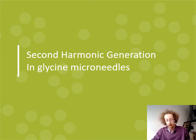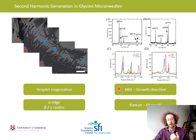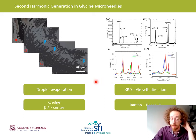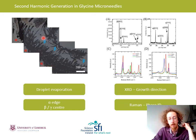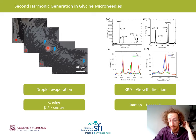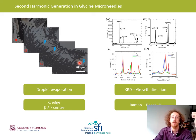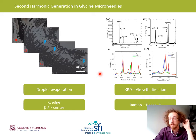Now on to second harmonic generation in glycine microneedles. Glycine is very simple to grow: mix alpha-glycine powder in deionized water, drop it onto a glass coverslip, and wait for it to evaporate. At the edges you get alpha-glycine, which is centrosymmetric — not interesting for this application. But towards the center of the droplet, where evaporation is quicker, you get asymmetric microneedles, a couple of microns in thickness and 20 to 30 microns in length, of both beta and gamma phases. Glycine is polymorphic: alpha is centrosymmetric, beta is asymmetric monoclinic, and gamma is also asymmetric with a trigonal structure.